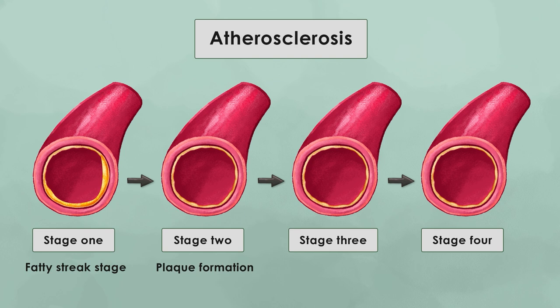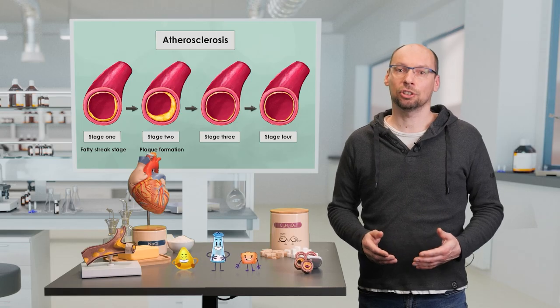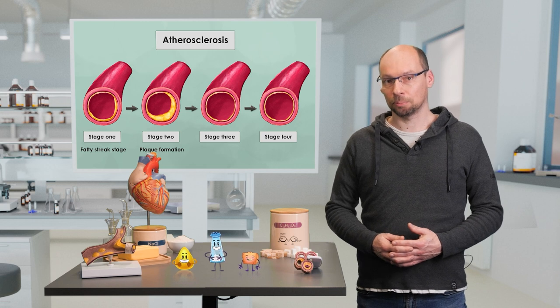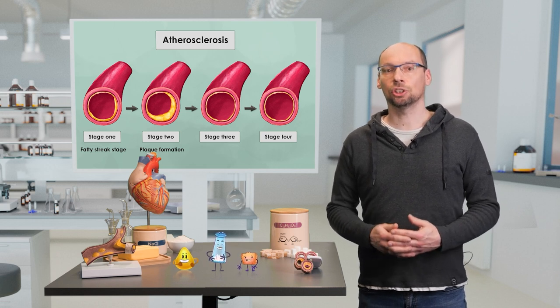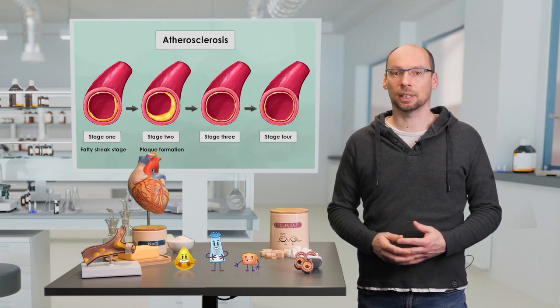The second stage is the fibrous plaque stage, in which plaque begins to build up in the arterial walls. This stage is generally not reversible and may require medical intervention to prevent further progression. The elasticity of blood vessels decreases in this stage, and the plaque also gets calcified, thereby stiffening the arterial wall. Common treatments include medications to control cholesterol and blood pressure, as well as procedures such as angioplasty and stenting to open blocked arteries.